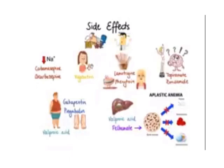Now let's summarize the side effects of antiepileptic agents. Keep in mind that almost all antiepileptics can cause sedation and dizziness. Looking at specific side effects: carbamazepine and oxcarbazepine can cause hyponatremia. Phenytoin can cause gingival hyperplasia and hirsutism. Topiramate and zonisamide can cause cognitive impairment; topiramate can also cause weight loss. Valproic acid can cause weight gain. Gabapentin and pregabalin can cause peripheral edema.